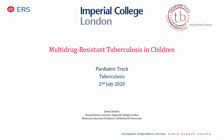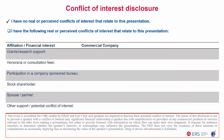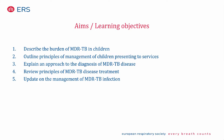James Seddon, senior lecturer at Imperial College and working in South Africa, introduces his talk on multidrug-resistant TB in children. Multidrug resistant means the organism is resistant to both isoniazid and rifampicin — two absolute key first-line drugs. He will cover the burden of MDR-TB in children, principles of management, how a child would present, how to diagnose and treat MDR-TB, and an update on MDR-TB preventive therapy.